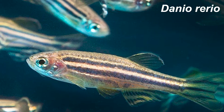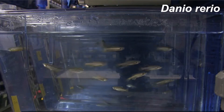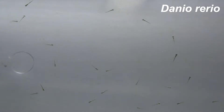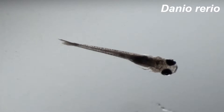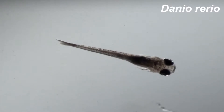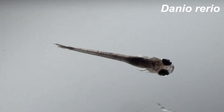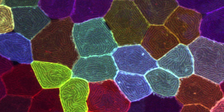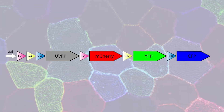Zebrafish is a vertebrate species commonly used as a model organism for research. Young zebrafish have transparent skin, making it possible to observe their organs without dissecting them. To understand how the researchers were able to make each skin cell fluoresce a different color, we need to understand this genetic construct.